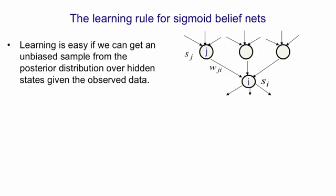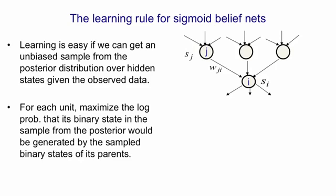So here's part of a sigmoid belief net. And we're going to suppose that for every node, we have a binary value. So for node j, that binary value is sj. And that vector of binary values is a global configuration for the net, which is a sample from the posterior distribution. In order to do maximum likelihood learning, all we have to do is maximize the log probability that the inferred binary state of unit i would be generated from the inferred binary states of its parents.